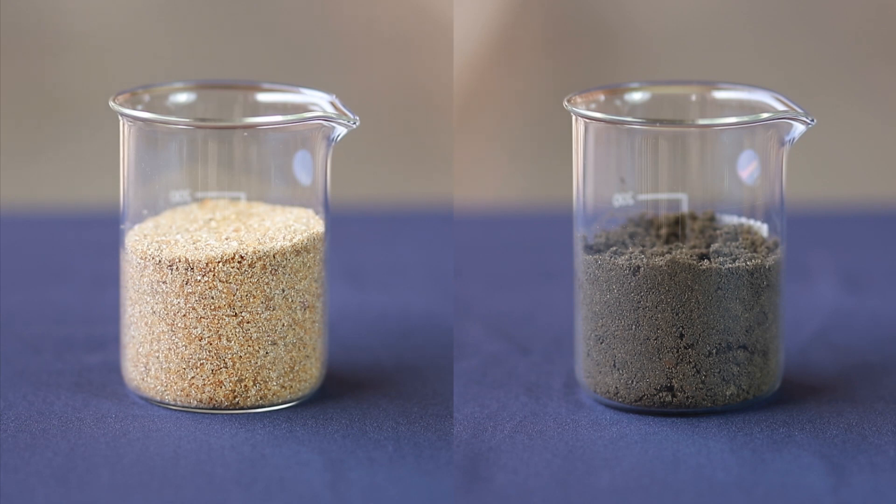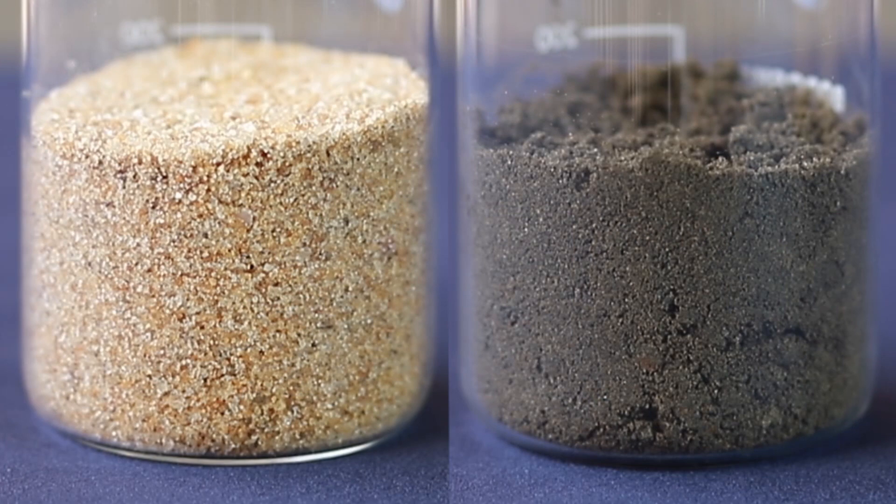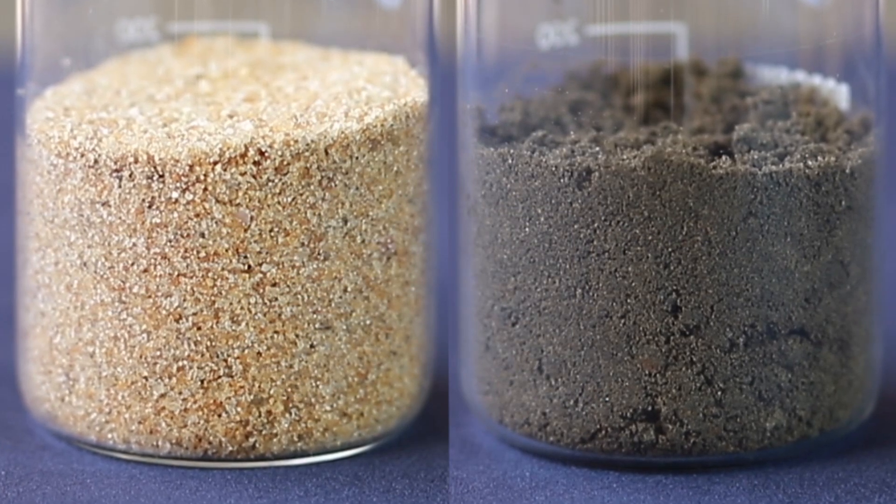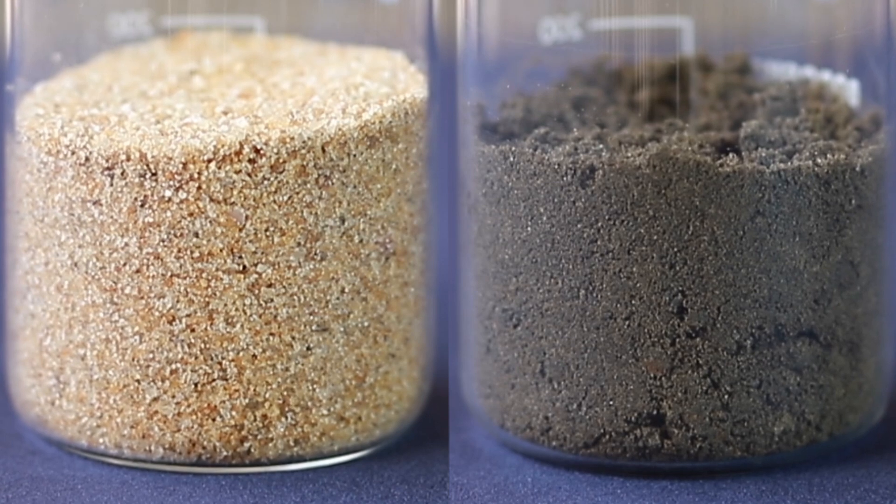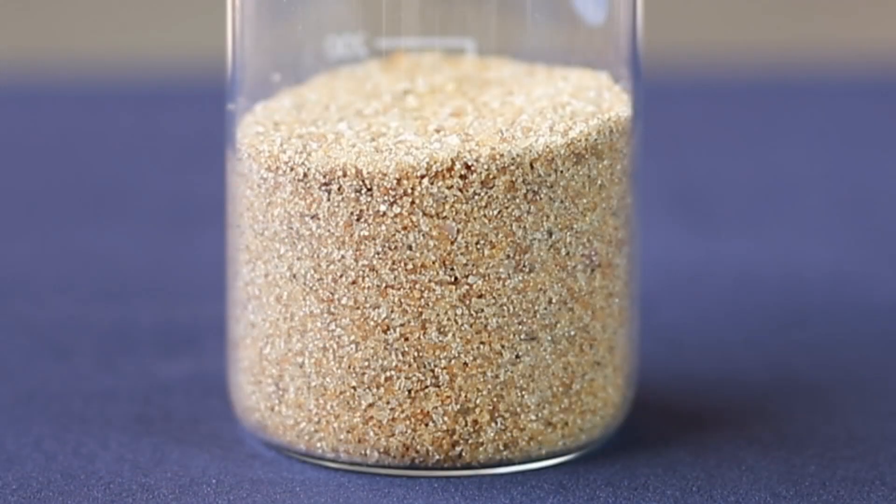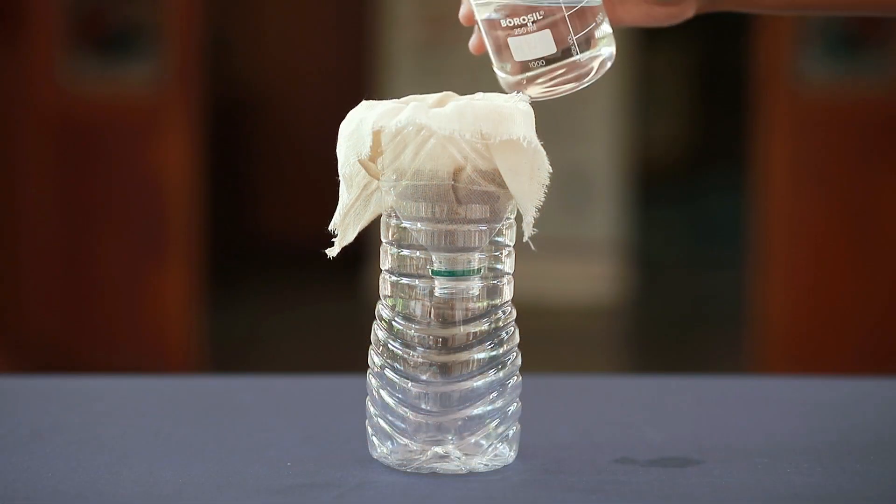The speed at which water flows through the soil depends on the particle size of the soil sample. Sand has particles of larger size, hence there are pores in between for the water to flow through.